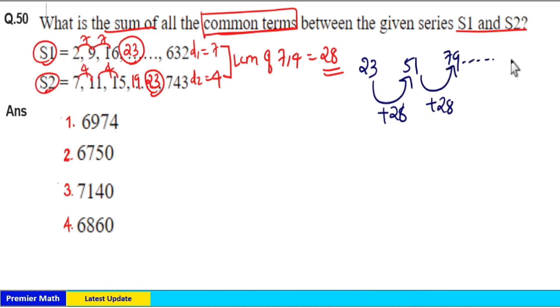And this will go on up to 632 or less than 632. The last term of this common term series can be either 632 or less than 632. After 632 there will be no common term between series S1 and S2. That is, the last term can be less than or equal to 632.